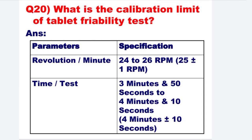And the last question: What is the calibration limit of tablet friability test? For revolutions per minute: 24 to 26 RPM. For timer test: 3 minutes and 50 seconds to 4 minutes and 10 seconds.